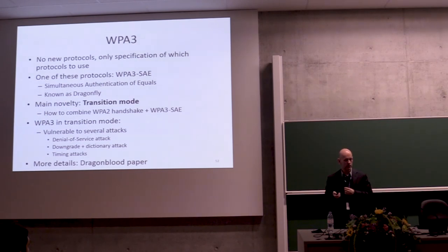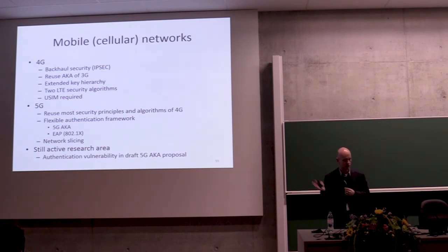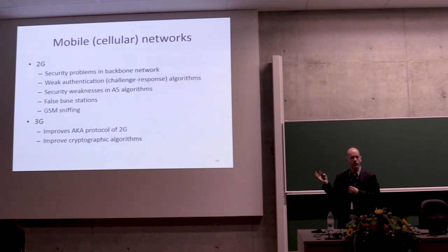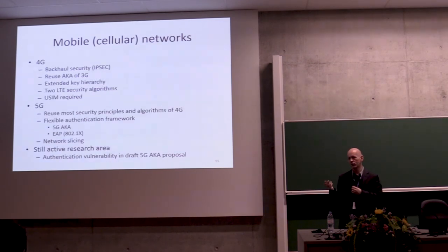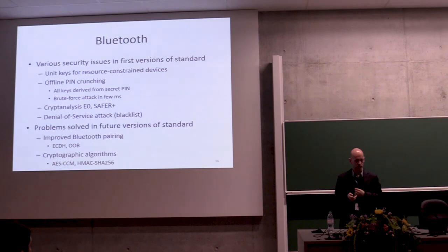Similar stories apply to other wireless standards. For 2G mobile networks there were many security problems in early versions, with later versions gradually fixing them, though it remains an active research area — even 5G's authenticated key agreement protocol has discovered security issues. Likewise, initial versions of Bluetooth had many security problems, with future versions solving most of them.